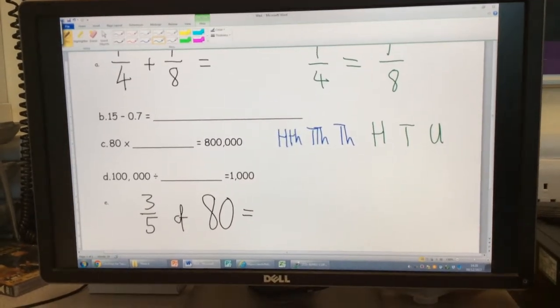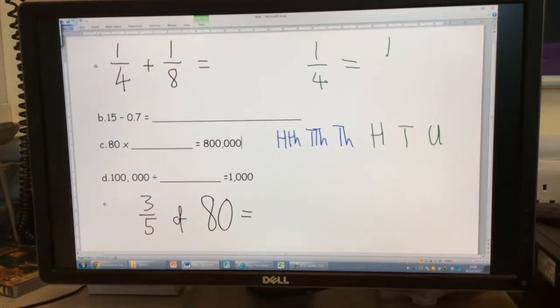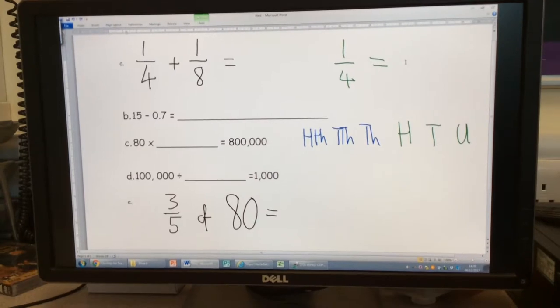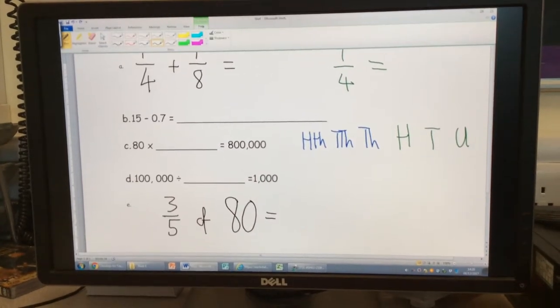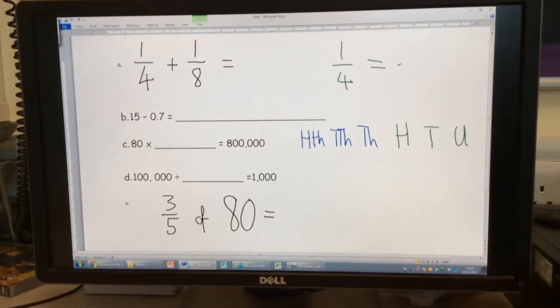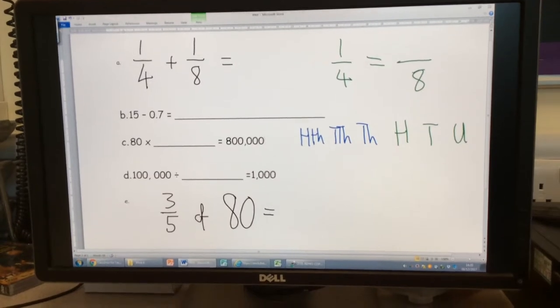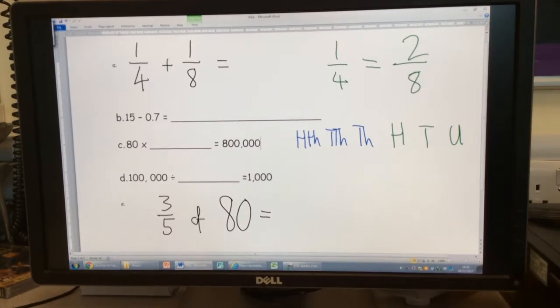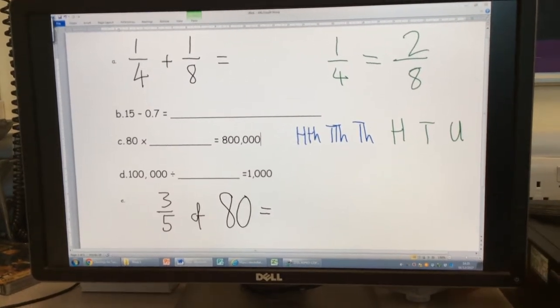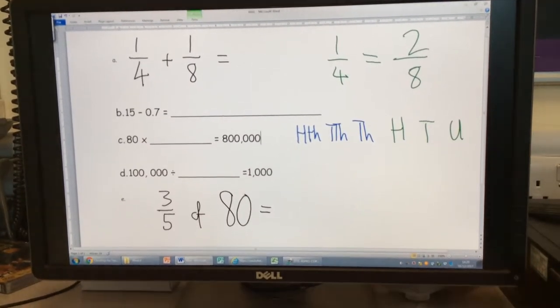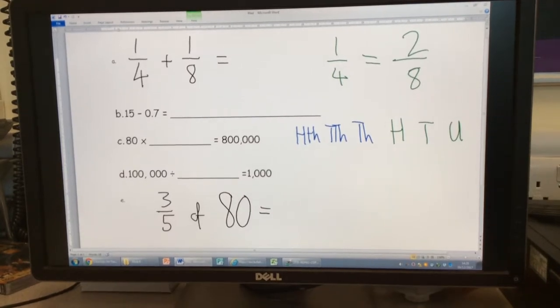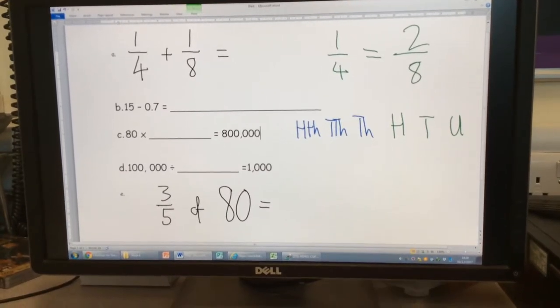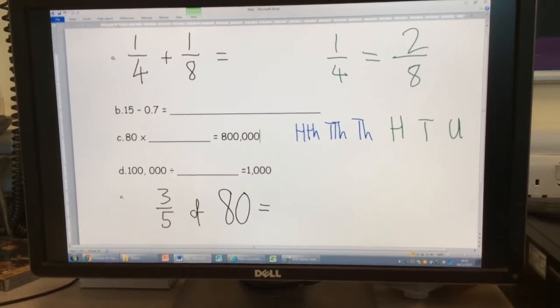What else do we need to do as well as multiply the denominator by two? We also need to multiply the one by two. So instead of having one eighth, how many eighths will I have? Two eighths. Excellent.